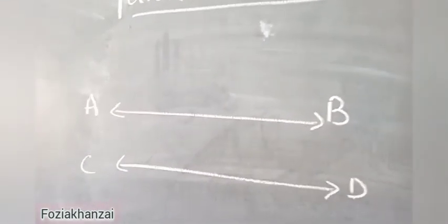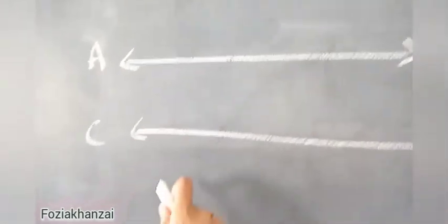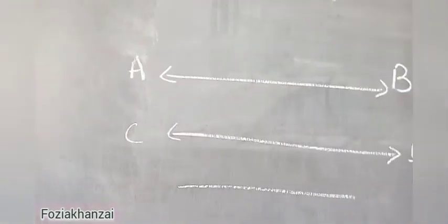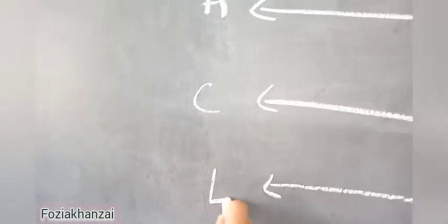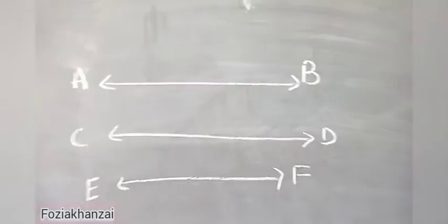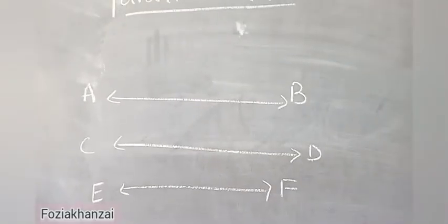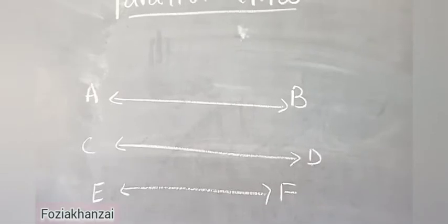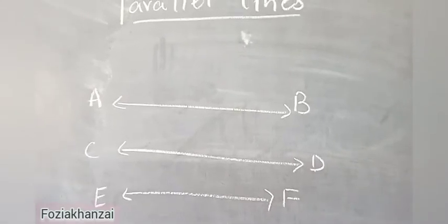They do not intersect each other. In this video we have AB and CD as two parallel lines. If we draw one more parallel line, EF — all are parallel lines, same distance, they cannot intersect each other.